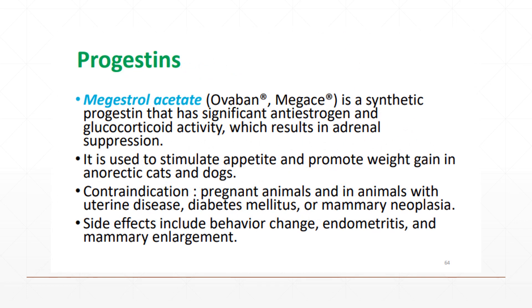Another category is progestins. Progestin is a natural or synthetic form of the steroid hormone progesterone, which is the major hormone that maintains pregnancy and prevents further ovulation during pregnancy. The drug under this class is megestrol acetate, a synthetic progestin that has significant anti-estrogen and glucocorticoid activity, resulting in adrenal suppression.